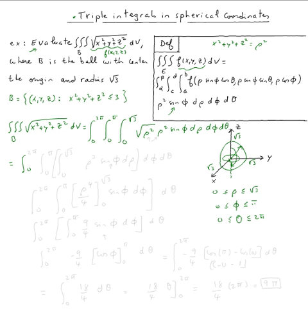This equals the integral from 0 to 2π in θ, 0 to π in φ, and 0 to √3 in ρ, of ρ³ sin φ dρ dφ dθ. Since sin φ is a constant with respect to ρ, the inner integral gives ρ⁴/4 evaluated from 0 to √3, times sin φ dφ dθ.